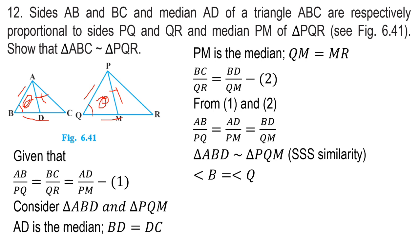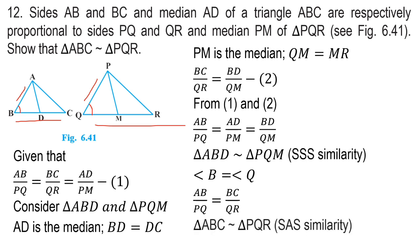Now consider the main triangles ABC and PQR. We know that angle B and angle Q are equal. We have AB by PQ is equal to BC by QR from the given information.